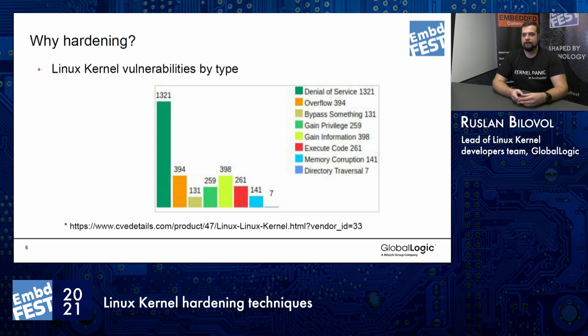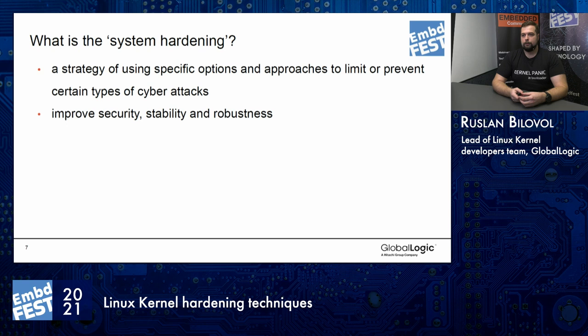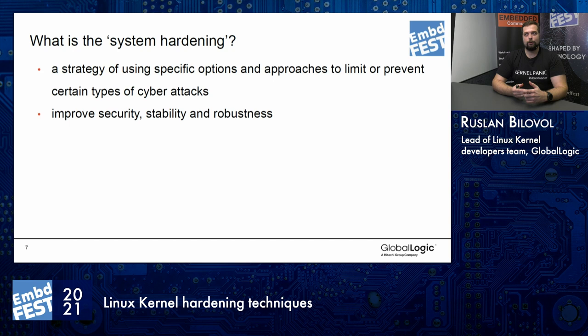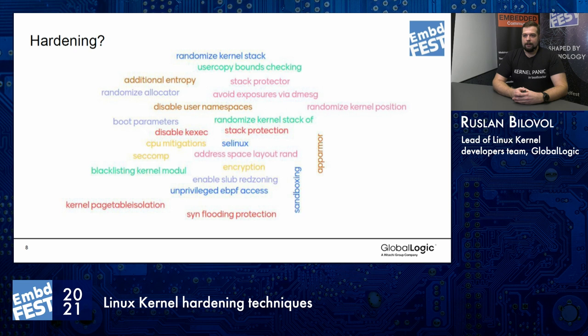Also, if you look at the type of vulnerabilities that we have, many of them are related to software bugs that exist in the Linux kernel. So what is system hardening? It's our strategy to use specific options and approaches to limit some kinds of cyber attacks and not exploit some bugs or issues that we have in the system. This has a very good improvement on system stability, security, and support — because when you have bugs, you need to have engineers who will support the kernel. The hardening itself is a very huge topic, so it's a topic for a separate conference. I put into this cloud of words only some small parts of what can be done for hardening.